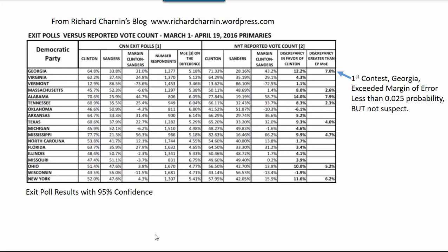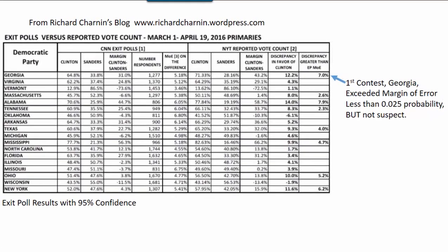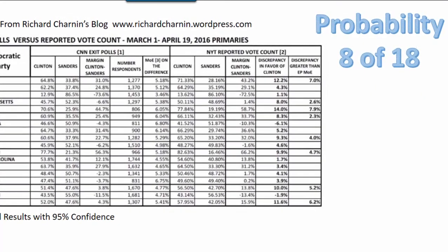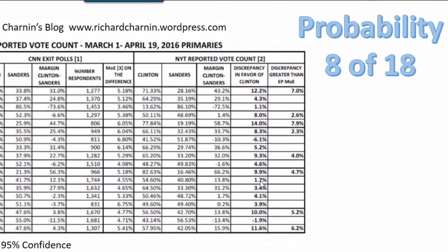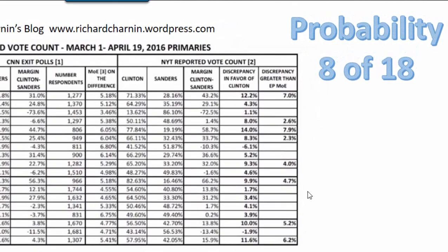There's less than a 0.025 probability of that happening — but this alone isn't suspect. In fact, 25 out of 1,000 times it's going to happen. Another question we might ask, looking at all of these results, is: what's the probability that 8 different times out of the 18 contests listed, the results would exceed the margin of error? We know that each time individually, there's a 0.025 probability that this will occur.